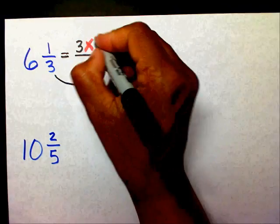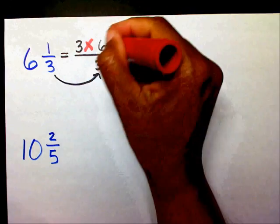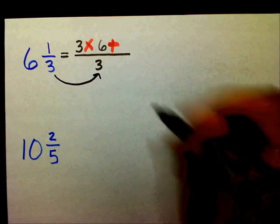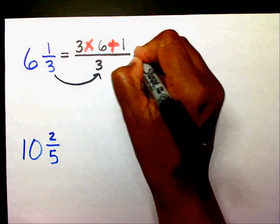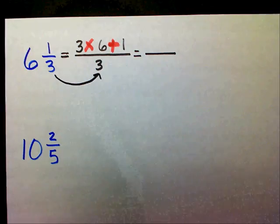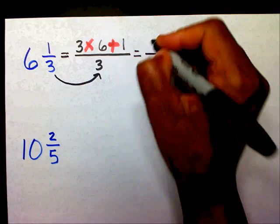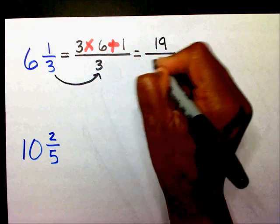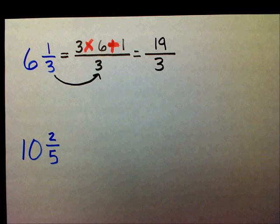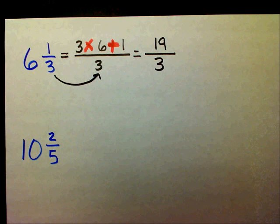six, plus one. Three times six is eighteen, plus one is nineteen. Bring my three over. Hope you got nineteen thirds. Let's work the next one.